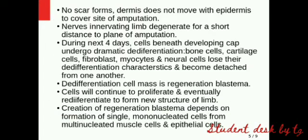The epidermis will move to cover the site of amputation. The nerves innervate and degenerate for a short distance to the plane of amputation — this is the nerve innervation. Then, in the next 4 days, there is dramatic de-differentiation of bone cells, cartilage cells, fibroblasts, myocytes, and neural cells — this is the de-differentiation capacity.